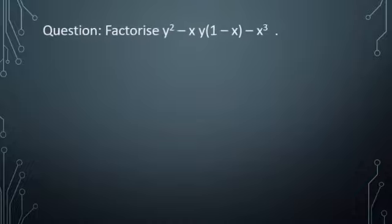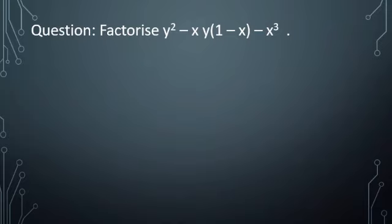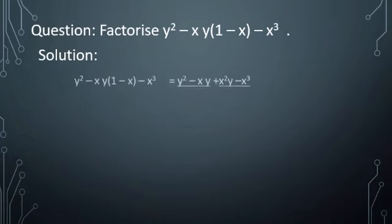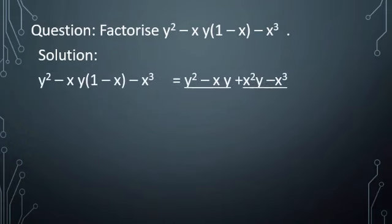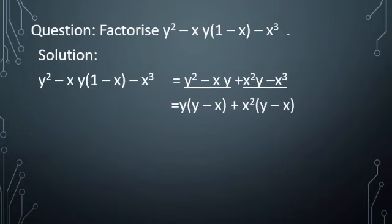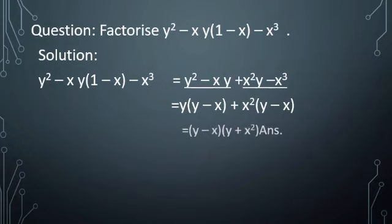Factorize y² − xy(1 − x) − x²y. This polynomial contains a bracket, so first we remove it to get y² − xy + x²y − x²y. The first two terms form one group and the last two terms form another group. From the first group we take out y, and from the last group we take out x². In both groups (y − x) is the common factor, so the factorization is (y − x)(y + x²).